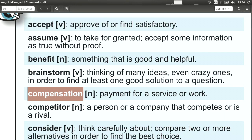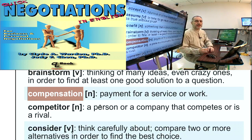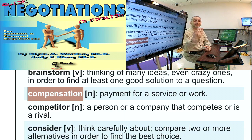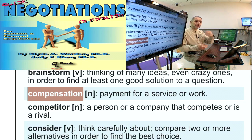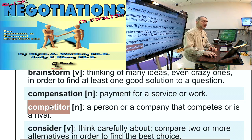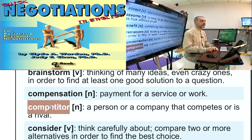'Compensation' is payment for something that has been done, some work that is completed. It's a bit like benefit, only more specific: you do A and I give you B — you wash my car, I pay you ten dollars. In negotiation we can use it more broadly: 'If you can give me a faster shipping time, I can compensate you later by giving you a different benefit.' So compensation is usually a one-to-one relationship, but also can be general — you do something good for me and I'll compensate you.